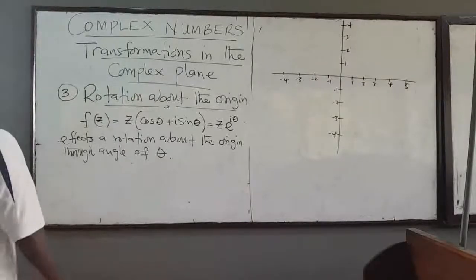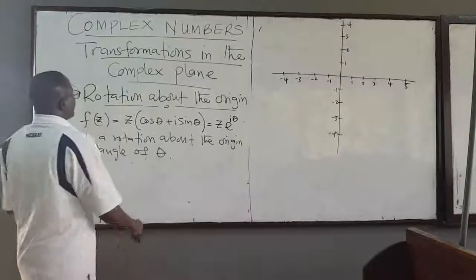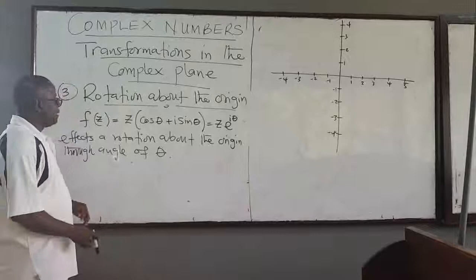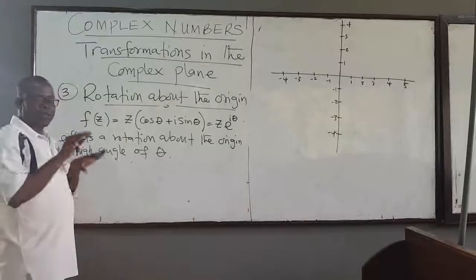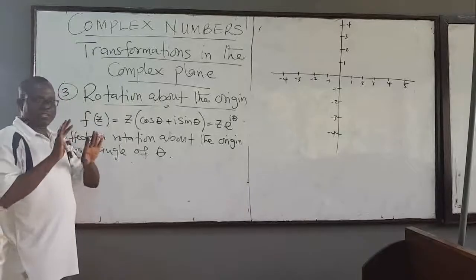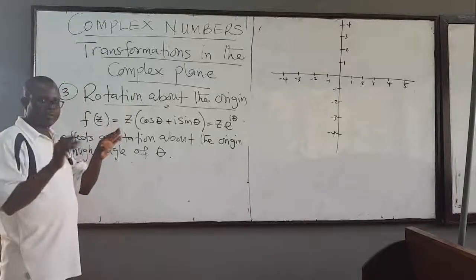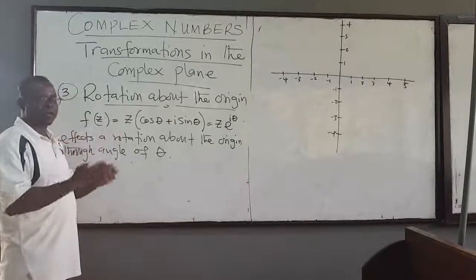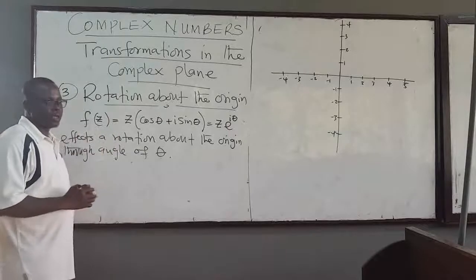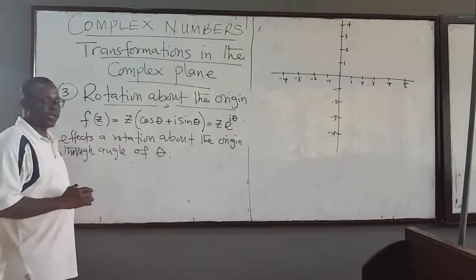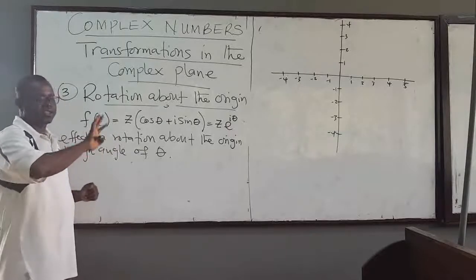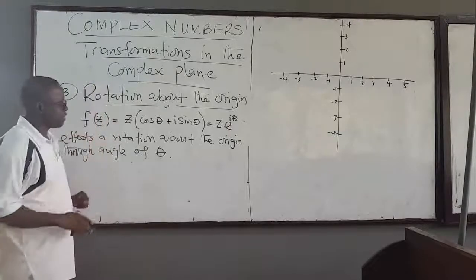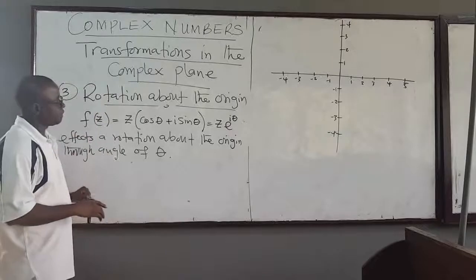We've started looking at transformations in the complex plane. We have looked at translations — if you have a z, you just add another complex constant to it, translating it by some vector.